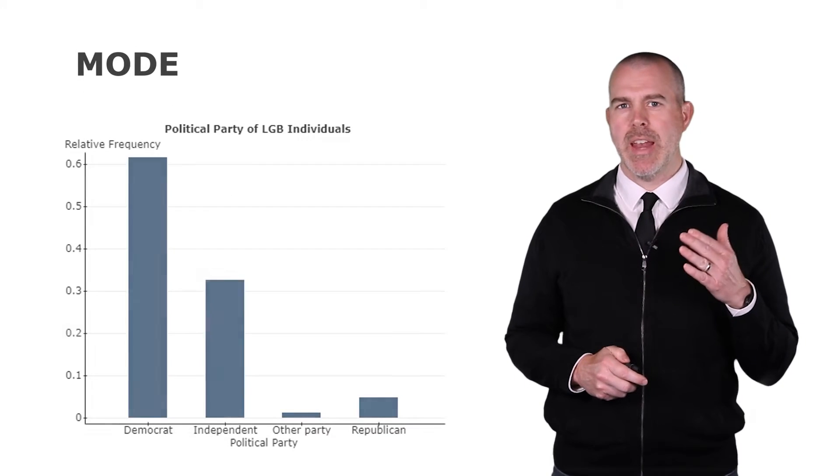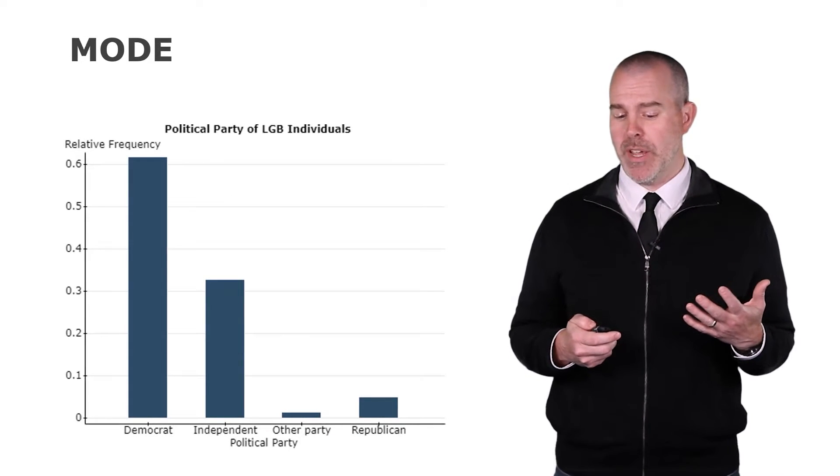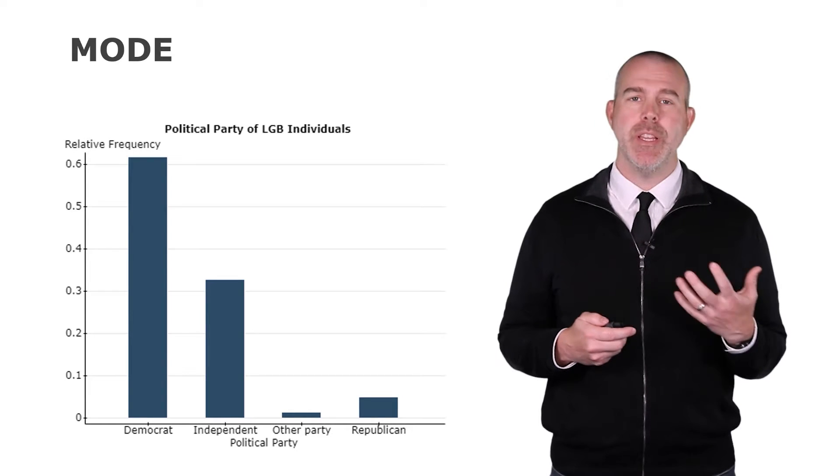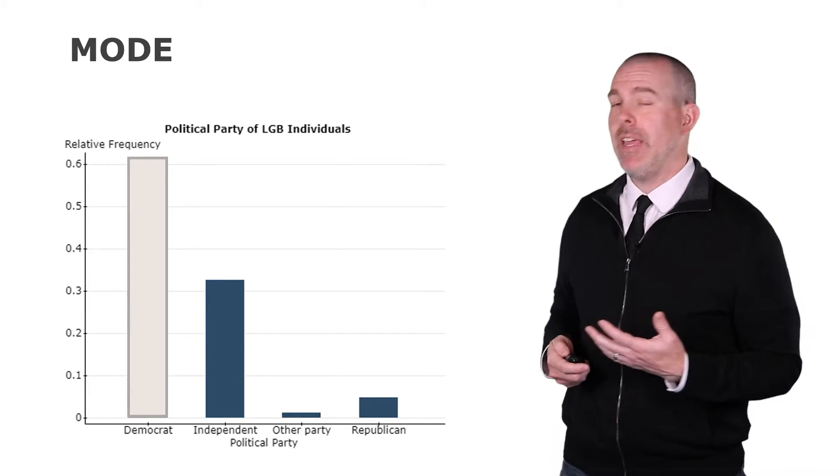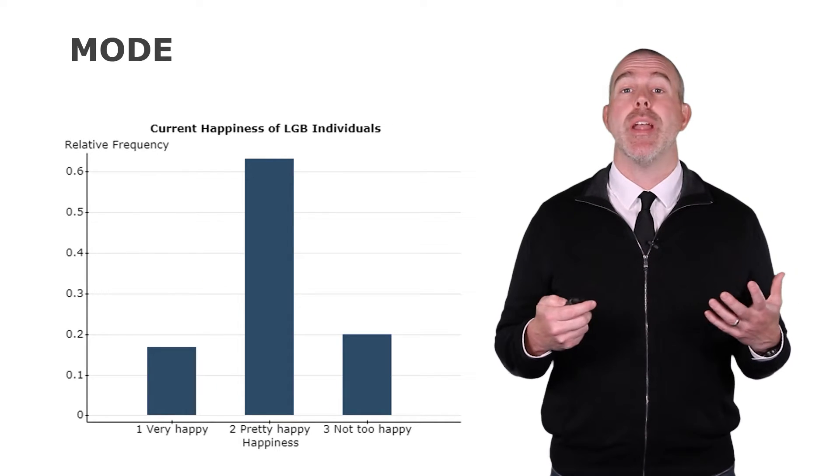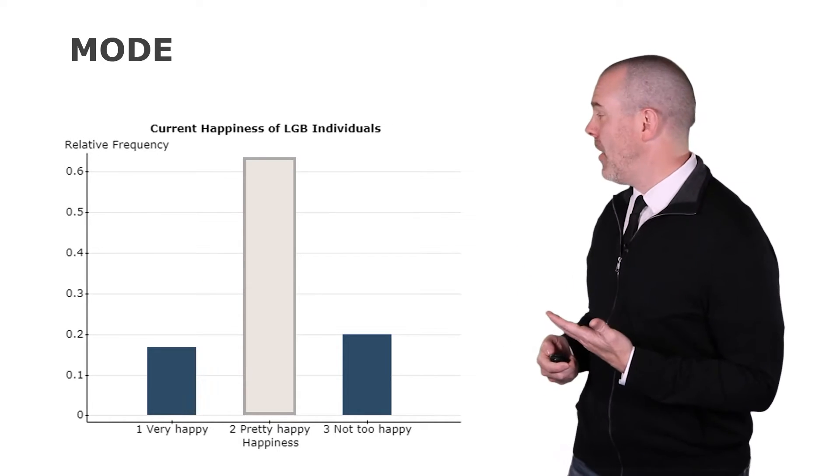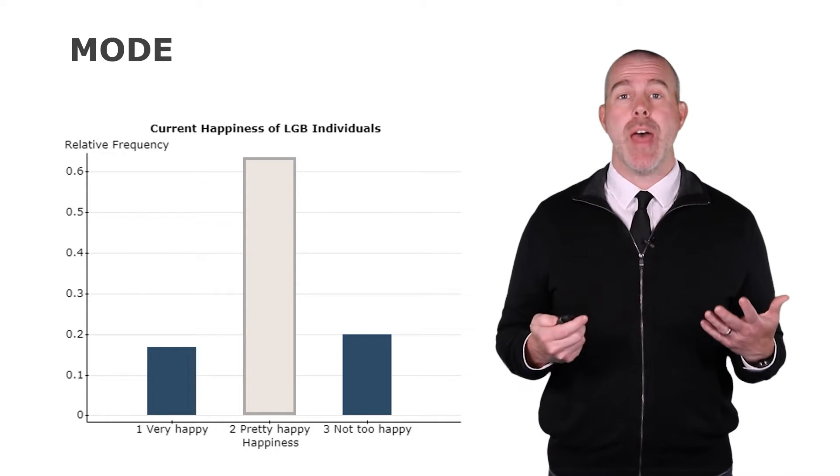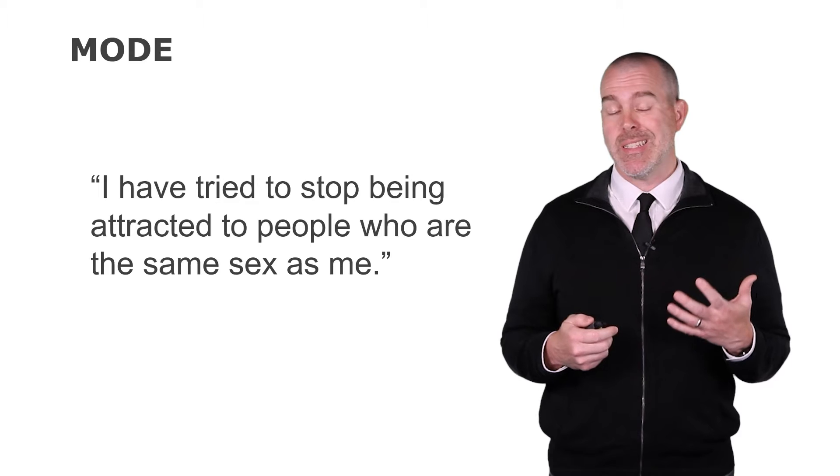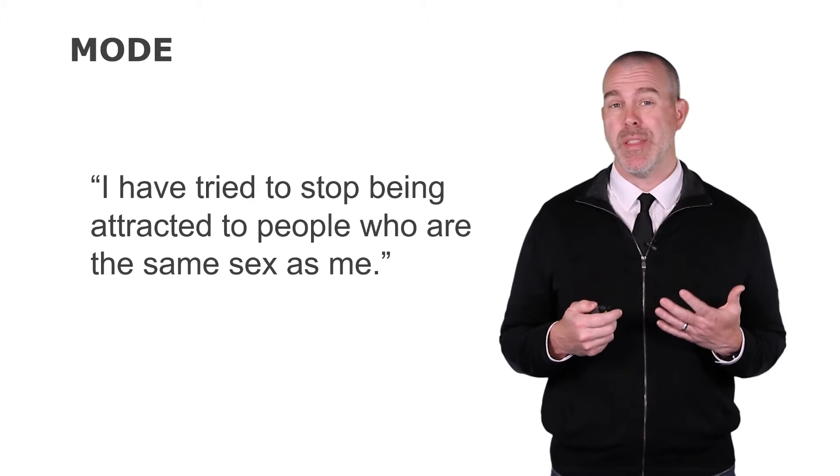Let's dive in and look at the mode. I've got a few examples here. One would be in our LGB database. We've got the political party, and you can see the most common is Democrat, so that would be the mode. Current happiness, the most common here is that people are pretty happy, so that would be the mode.